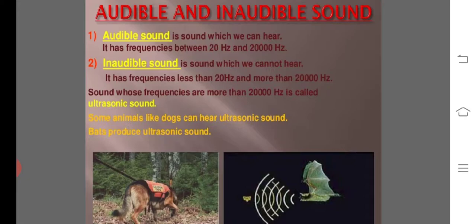Audible sound is sound which we can hear. It has a frequency between 20 Hz to 20,000 Hz. Inaudible sound is the sound which we cannot hear and it is below 20 Hz or more than 20,000 Hz.